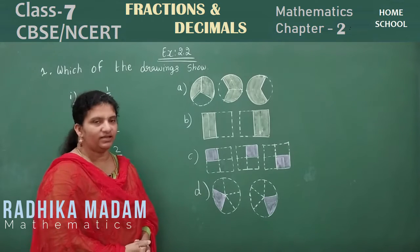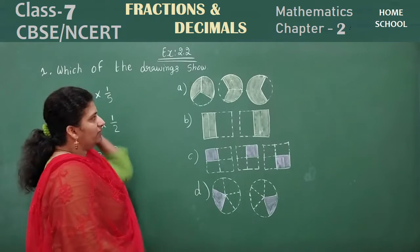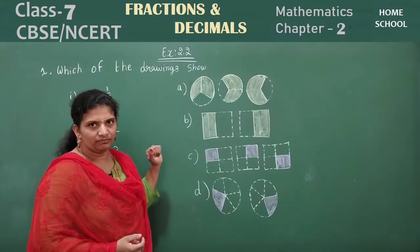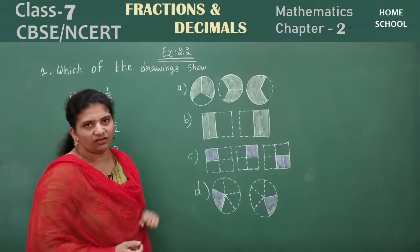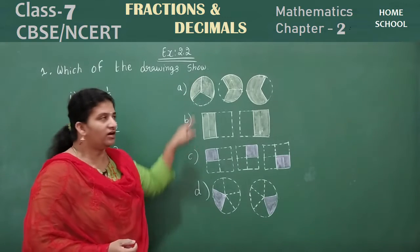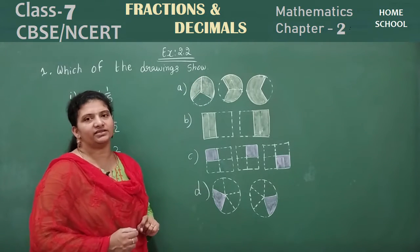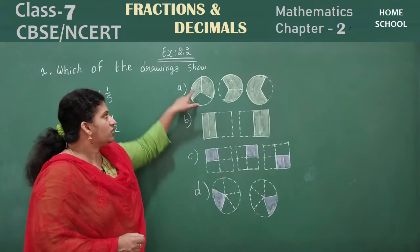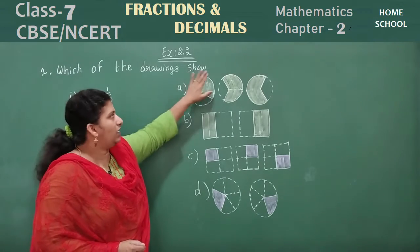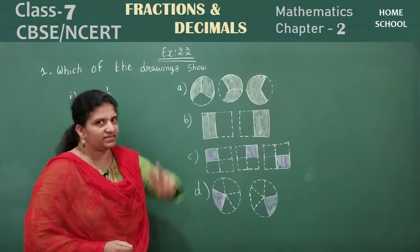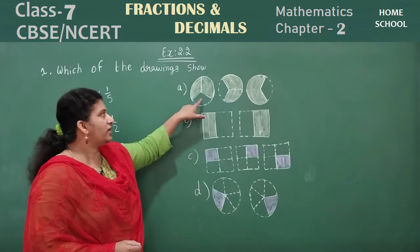Now we need to observe the fraction first, then see the problem. Look here — this is a whole. How many parts is it divided into? 1, 2, 3. So what is shaded here? Two parts are shaded. How do you write this fraction? 2 by 3. The whole has 3 parts and 2 parts are shaded.